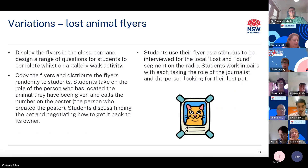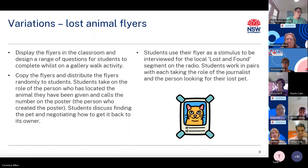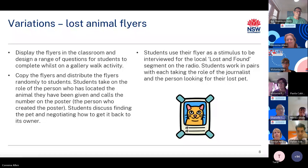You could save time by pre-writing the questions based on the students in the class — for example, 'What is Joshua's dog's name?' You could even write the questions in the target language depending on the skills of your students. The questions could also be around feedback, such as 'Which flyer is the most attention grabbing and why?' Students can also take on the role of the person who has located the animal and calls the number on the poster, discussing finding the pet and negotiating how to get it back to its owner. Finally, students use their flyer as a stimulus to be interviewed for the local lost and found segment on the radio, working in pairs with each taking the role of the journalist and the person looking for their lost pet.